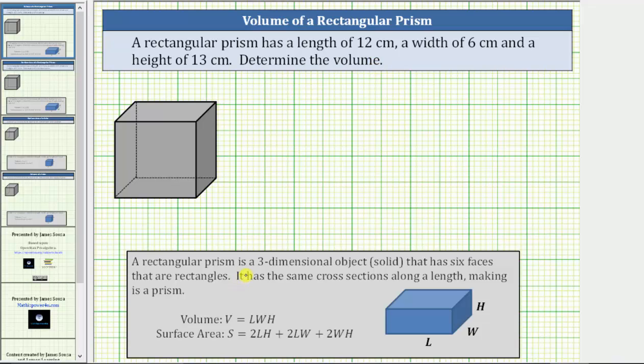A rectangular prism is a three-dimensional object or solid that has six faces that are rectangles. We can think of a rectangular prism as a box pictured here.